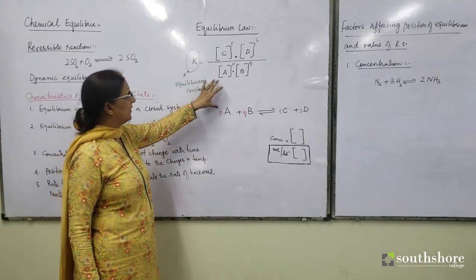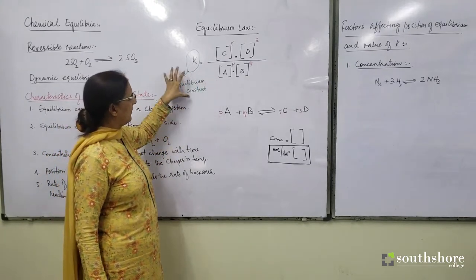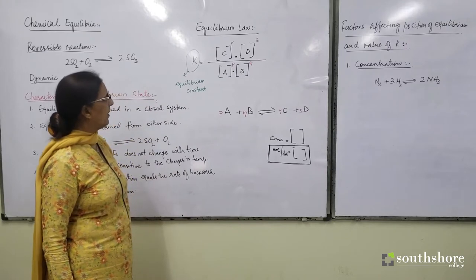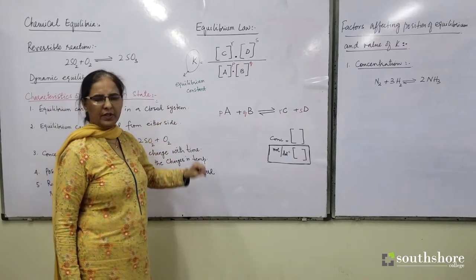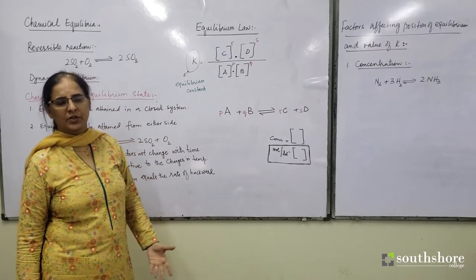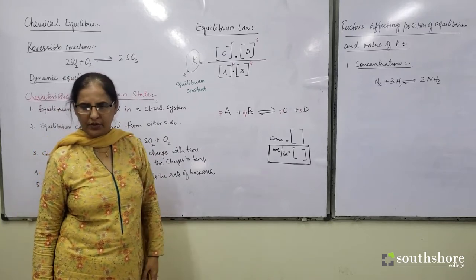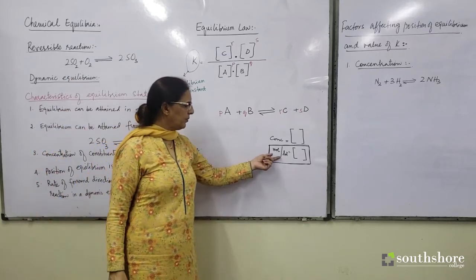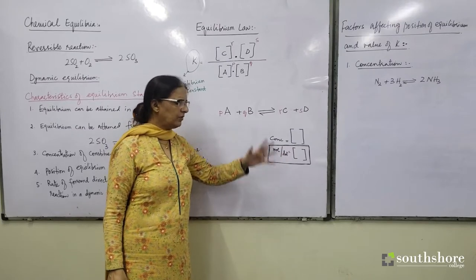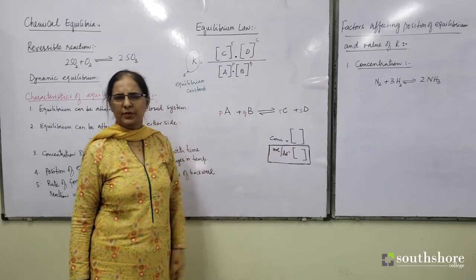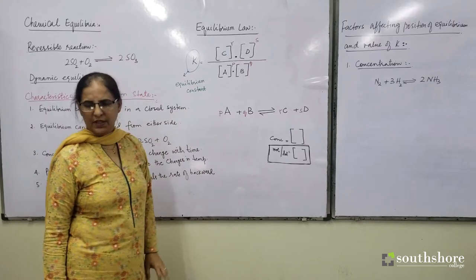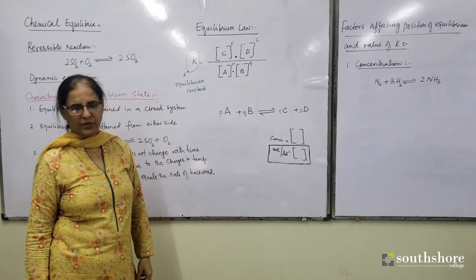Once we have used this formula, we have calculated the value of the equilibrium constant. Remember, the value of equilibrium constant is independent of initial concentration. You can use 1 mol per dm³, 0.5 mol per dm³, or 11 mol per dm³ concentration — the value of K is independent of initial concentration.